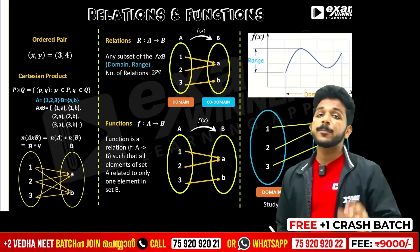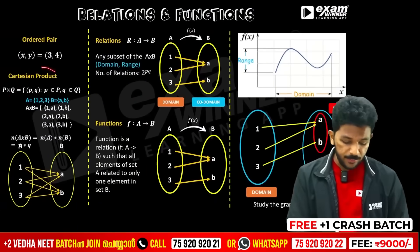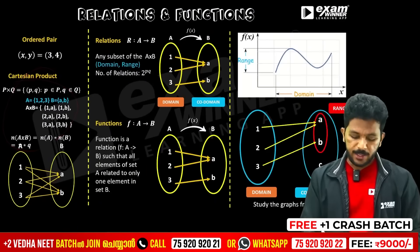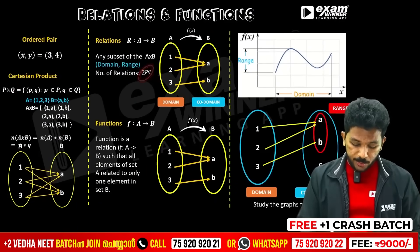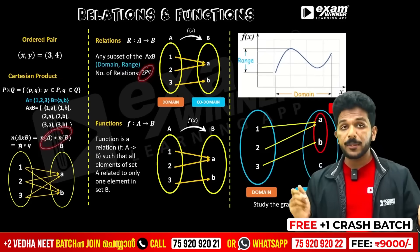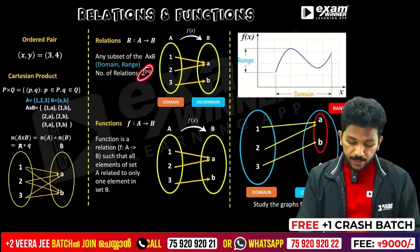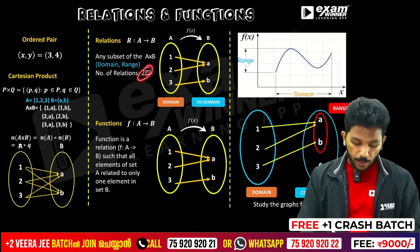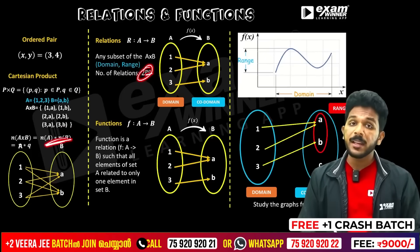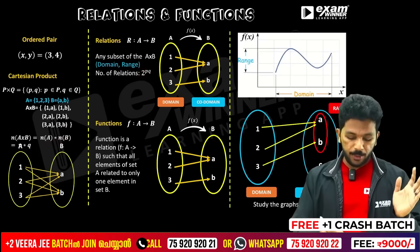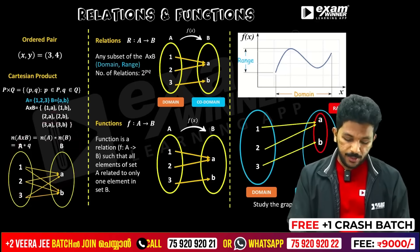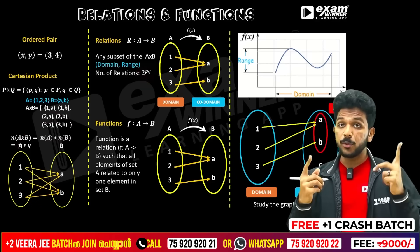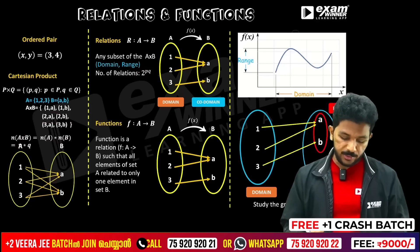Relation — it is a subset of the Cartesian product. What subset? The number of relations is 2 raised to the power of (P into Q), where P into Q is the number of elements of the Cartesian product. So number of relations = 2 raised to that power.